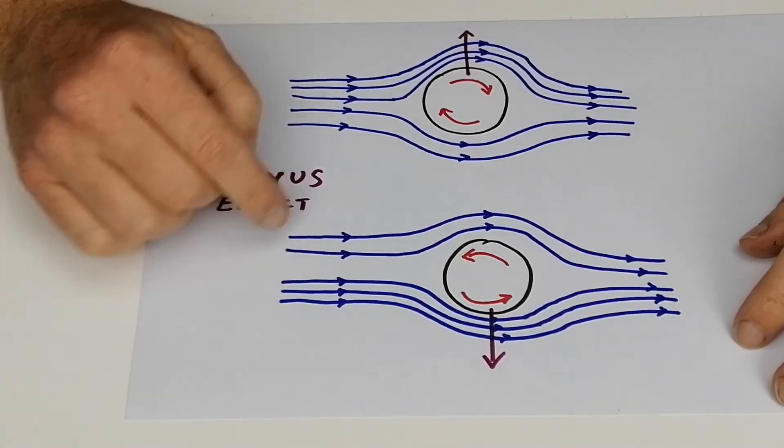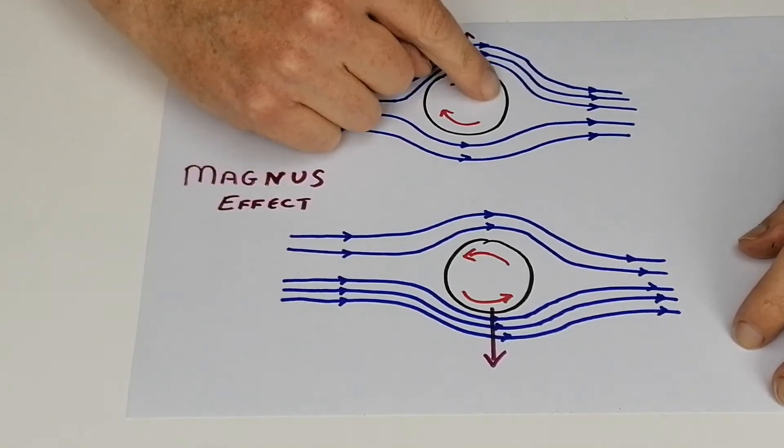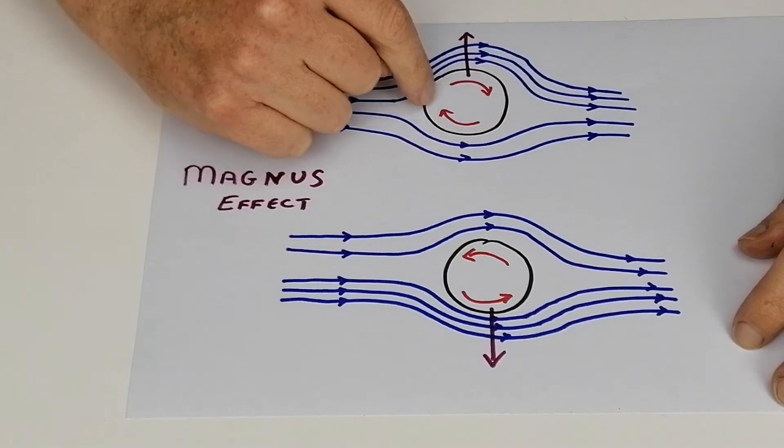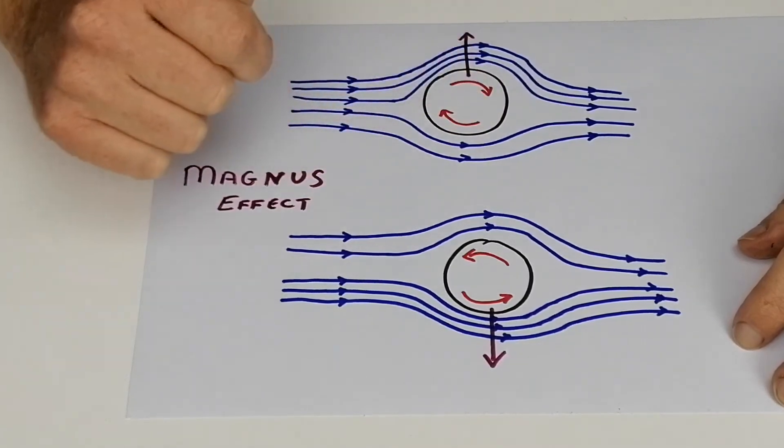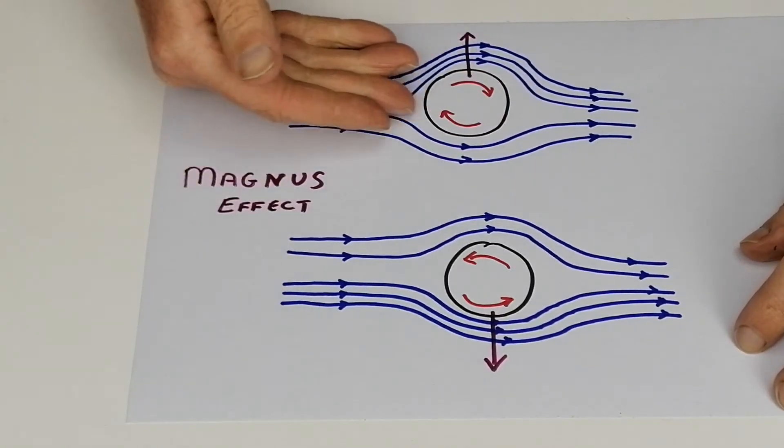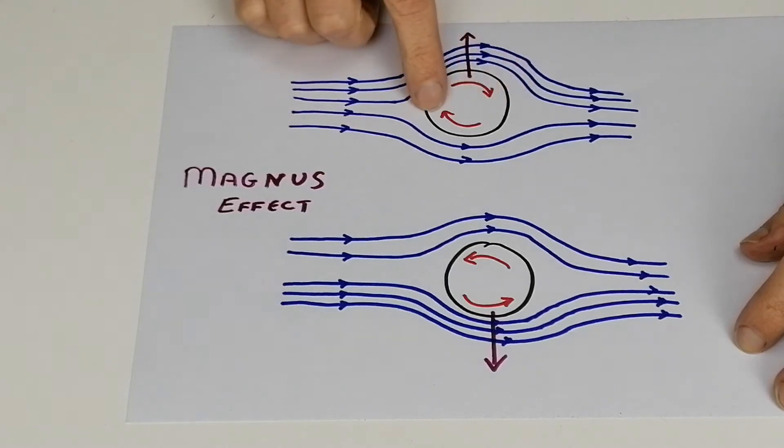If we just take this top example here, think of this black circle as the coffee cup, and as it spins around, the air is coming from this direction. If you take it in two parts, the top part of the cup is actually going in the same direction as the air that's going by it, so that kind of adds to it—it's not putting any force against it.